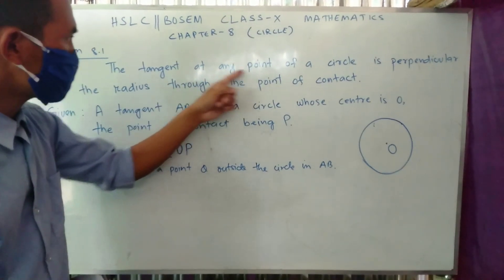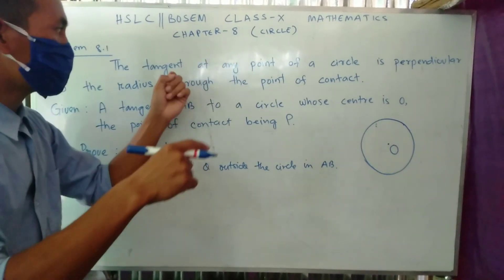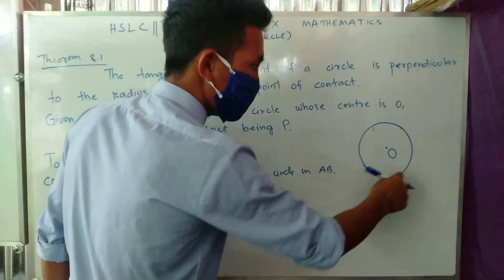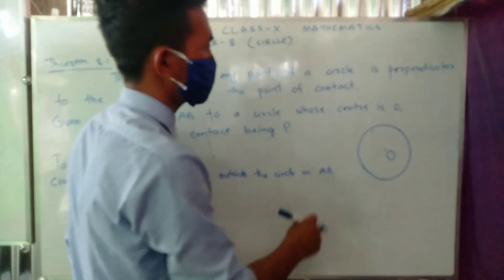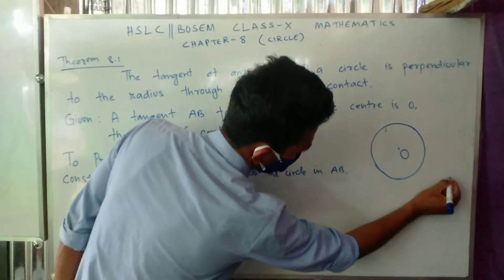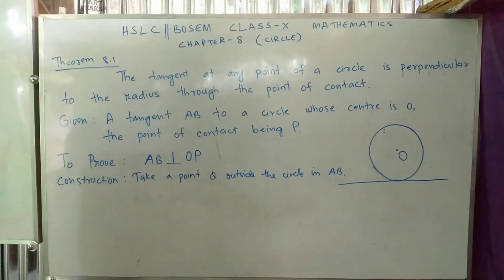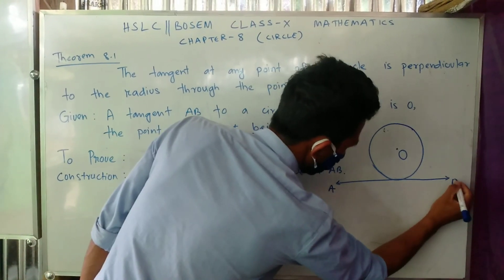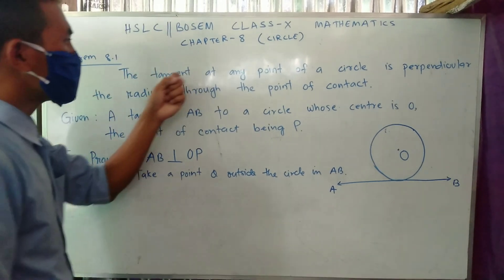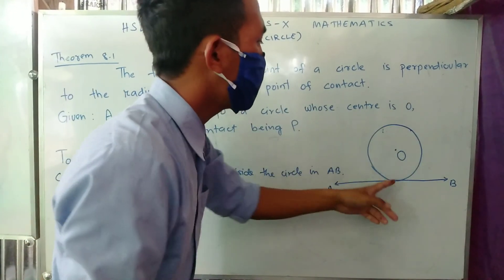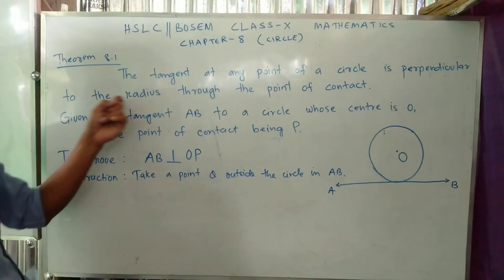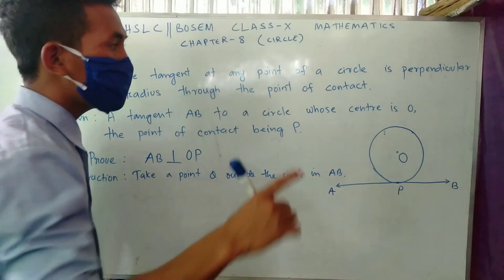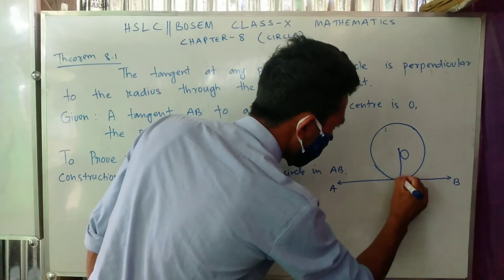At any point on the circle, we draw a tangent. The question involves a circle, and we draw a tangent to the circle from point P. This is line AB. At any point of contact, the tangent is perpendicular to the radius through the point of contact. Point of contact is point P, and the tangent E is perpendicular to the radius at that point.